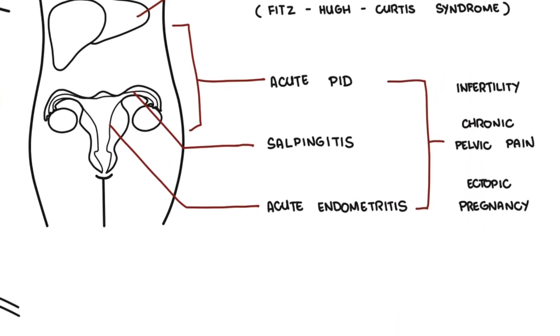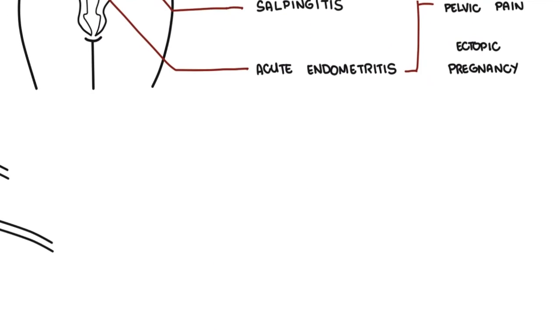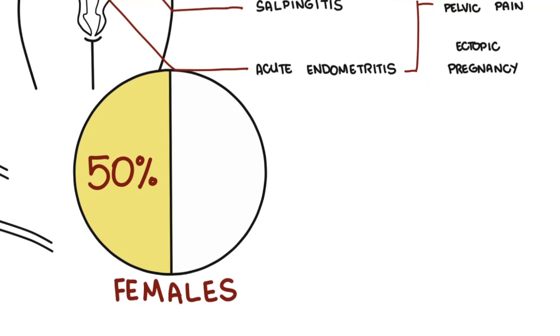Symptoms of urogenital gonorrhea in females occur only in 50% of cases, and many will not manifest symptoms. In females, symptoms include cervicitis, which is inflammation and pain in the cervix. They also have purulent cervical discharge, yellow and malodorous, dysuria, as well as abdominal pelvic pain.